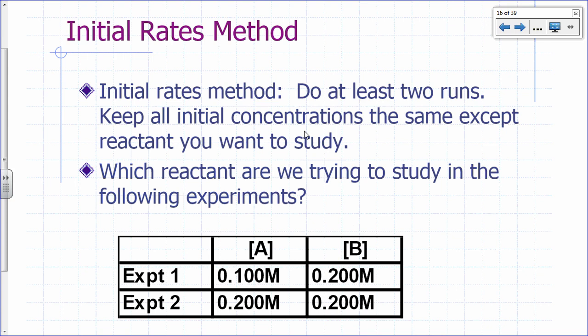To determine the reaction order, a commonly used technique is the initial rates method. You do at least two runs, keeping all initial concentrations the same except for the reactant you want to study. For example, in two experiments with reactants A and B: Experiment 1 has 0.1 M A and 0.200 M B; Experiment 2 has 0.2 M A and 0.2 M B. We're holding B constant and changing A to study the effect of A on the rate. Initial rate is the rate at time t=0.